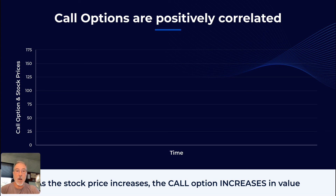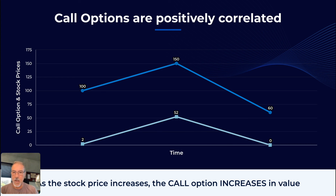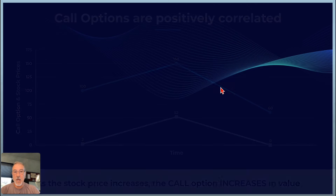Call options are positively correlated, meaning that if I own a call option it follows the price of the stock — usually a little bit less because we're paying a premium. If the stock goes up, the price of my call option goes up; if the stock goes down, the value of my call option goes down. Other factors come into play as well, such as volatility and general market sentiment, but the call option will generally follow the price of the underlying stock.